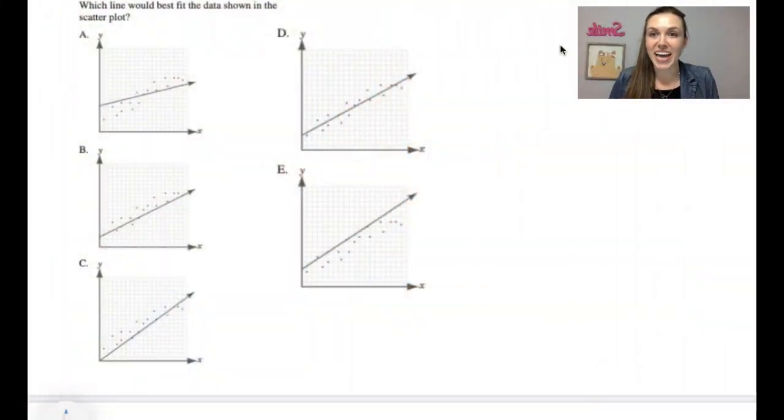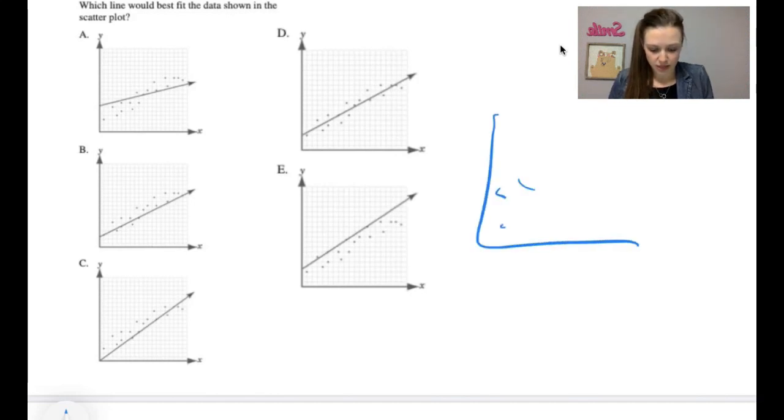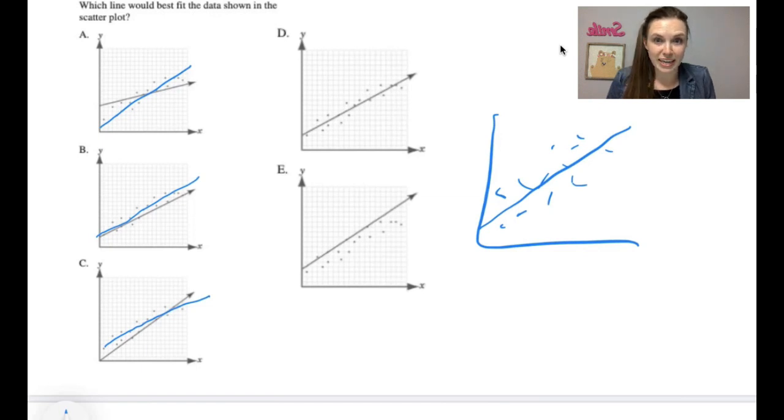Which line would best fit the data shown in the scatter plot? So basically, a scatter plot is we have all the little dots, and we have to have a line that goes through the middle, through the median. So here's a line like that. Now notice here with A, the line kind of goes more like that. With B, the line is a little bit too low. We need it to kind of go up a little bit more. C, again, it's kind of a different line there. D seems like a pretty good candidate. E, the line is a little bit too high. It's more like down there. So what is the answer? D.